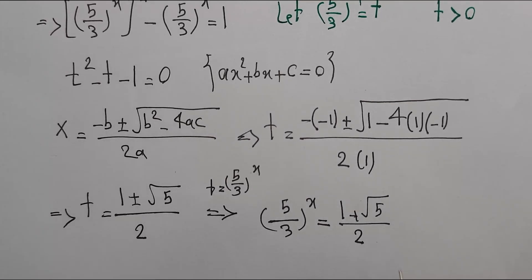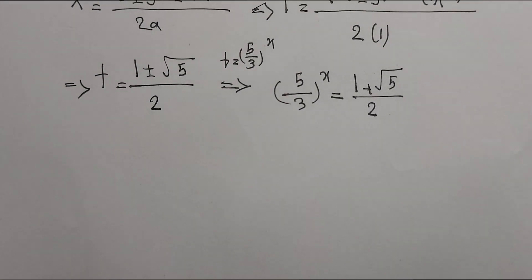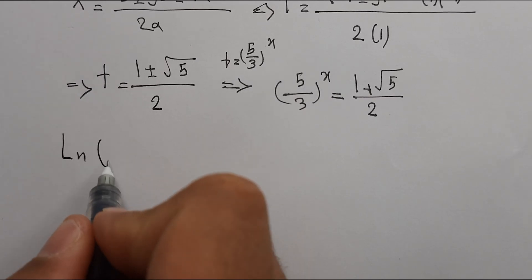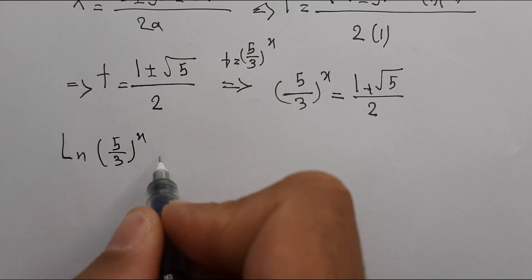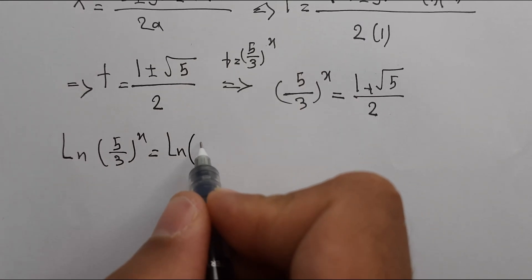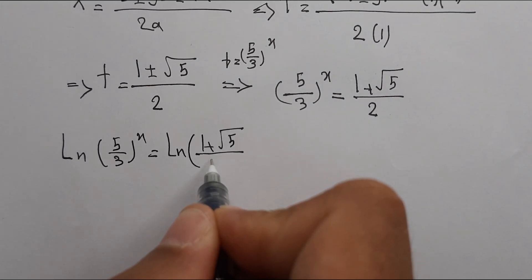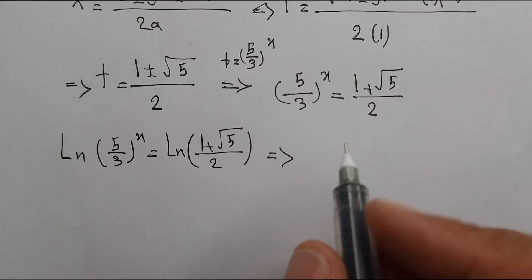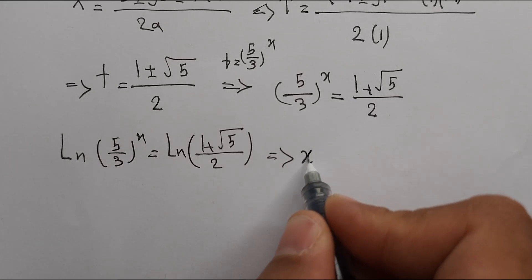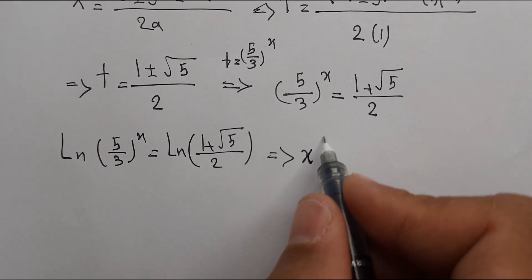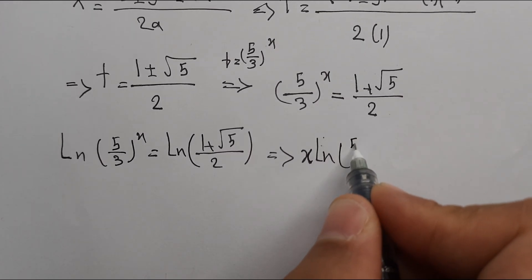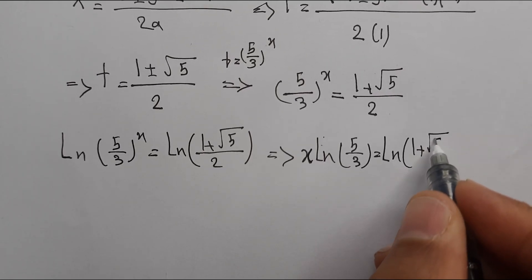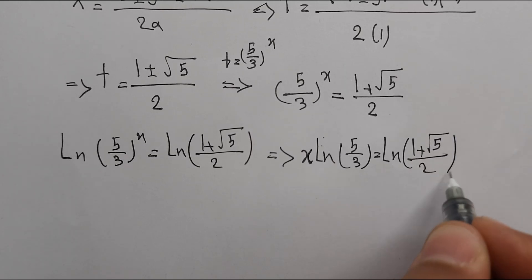Taking the natural log of both sides: ln[(5/3)^x] = ln[(1 + √5)/2]. Bringing the exponent down, we get x · ln(5/3) = ln[(1 + √5)/2].